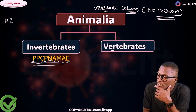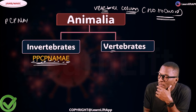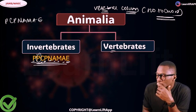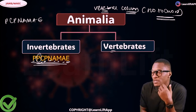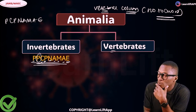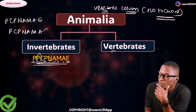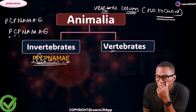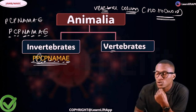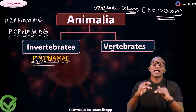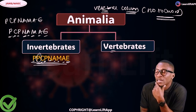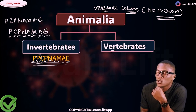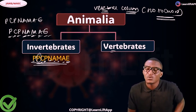Take note that at your A-level they will mostly talk about PCP NAMIA without the second P, because the Porifera are the sponges and A-level doesn't talk much about them. So the major phyla are: Protozoa, Coelenterata, Platyhelminthes, Nematoda, Annelida, Mollusca, Arthropoda, and Echinodermata. Those are the invertebrates. Under the vertebrates we use the mnemonic PARAM — Pisces, Amphibia, Reptilia, Aves, and Mammalia.